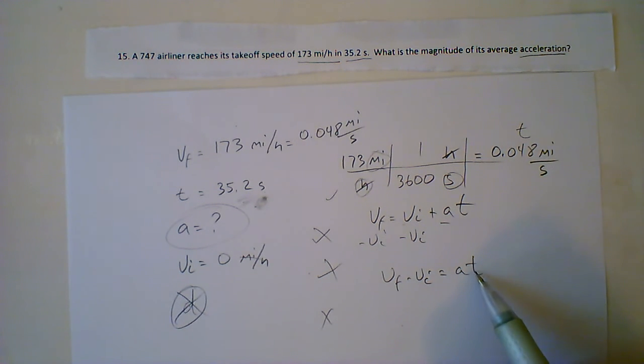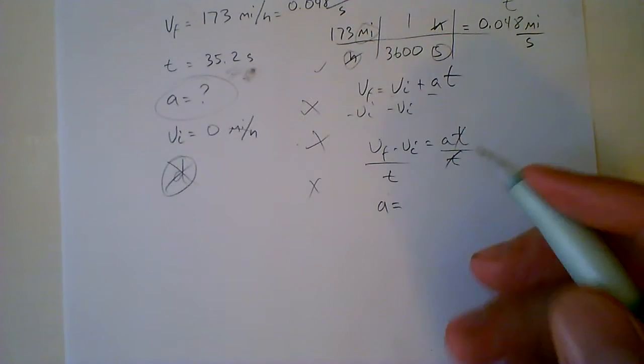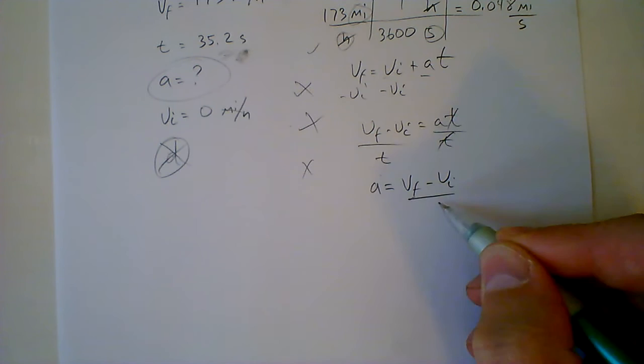Now I need to go ahead and get rid of the T. Since T is over here, it's multiplied. I can divide both sides by T. When I cross that out, I'm going to get A equals, I'll move this up a little bit, A equals VF minus VI over T.